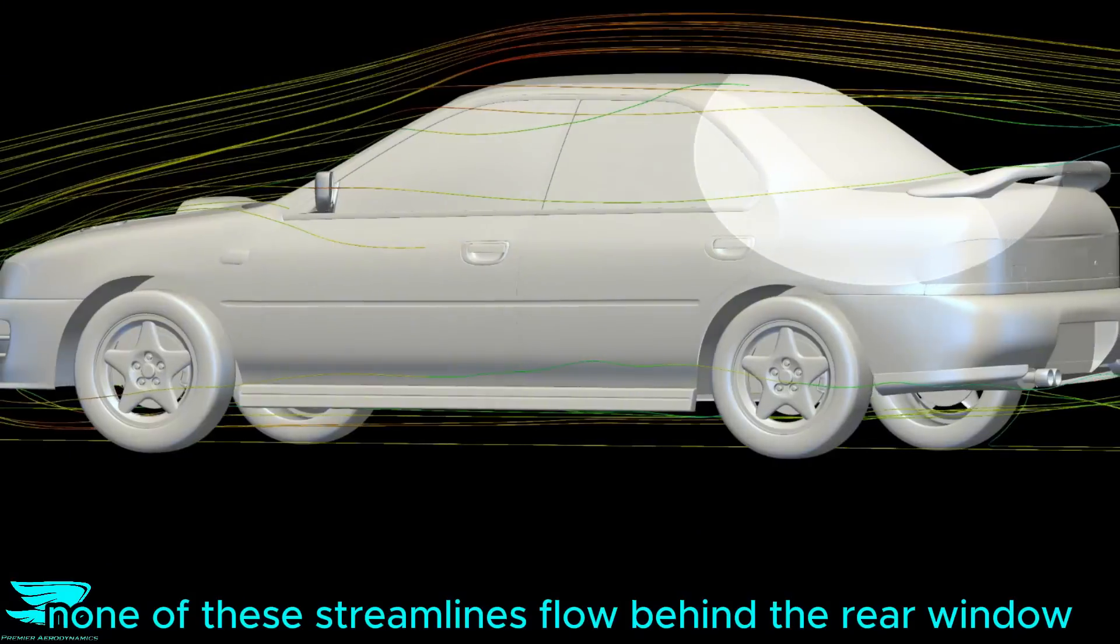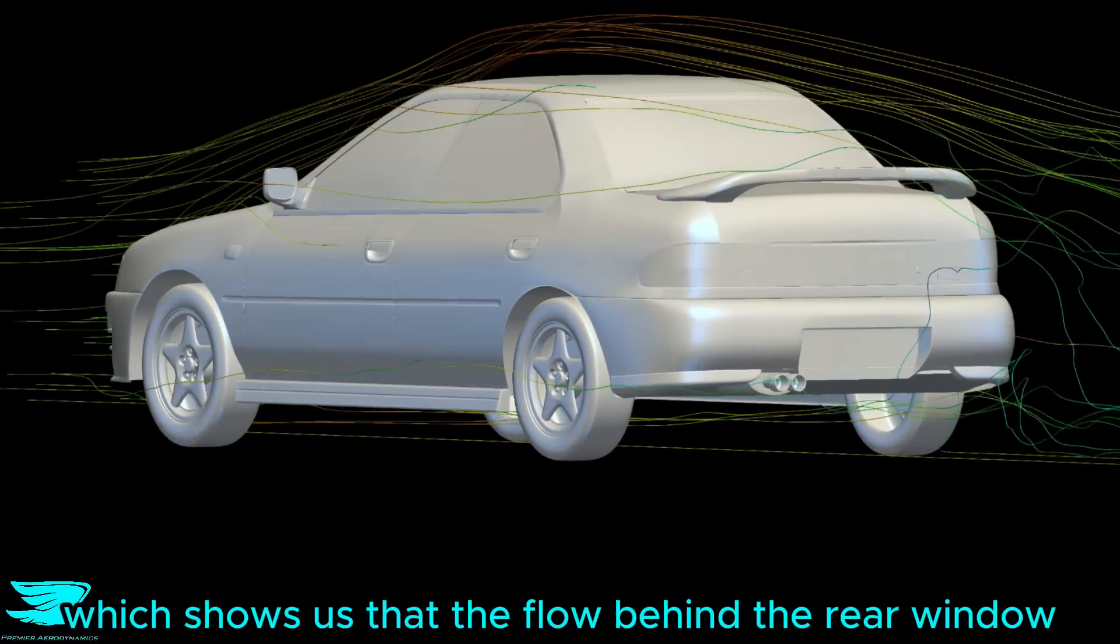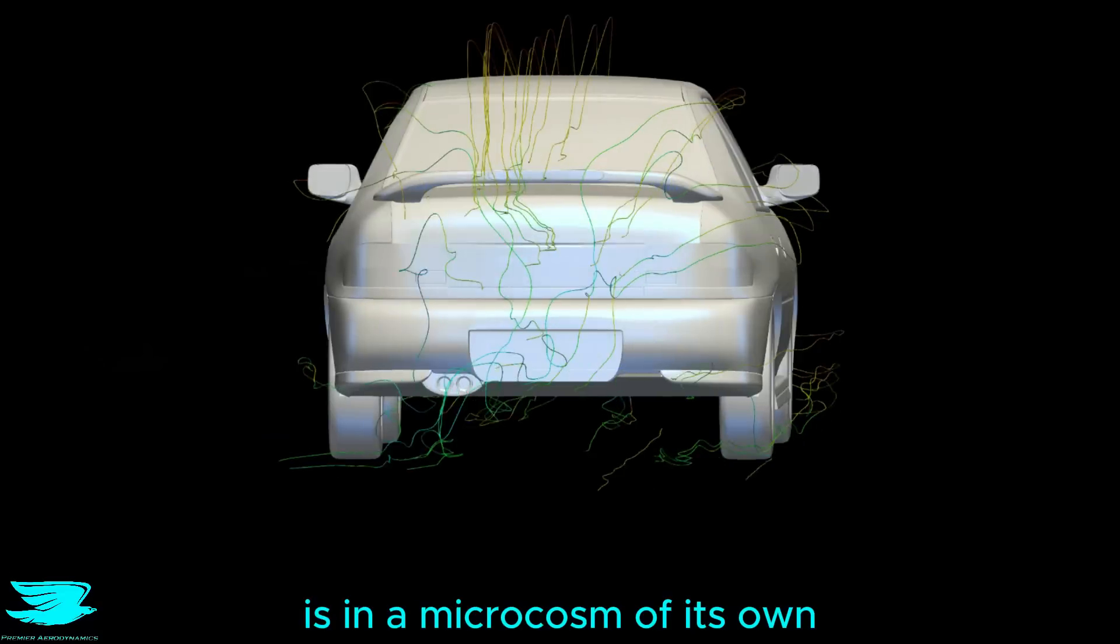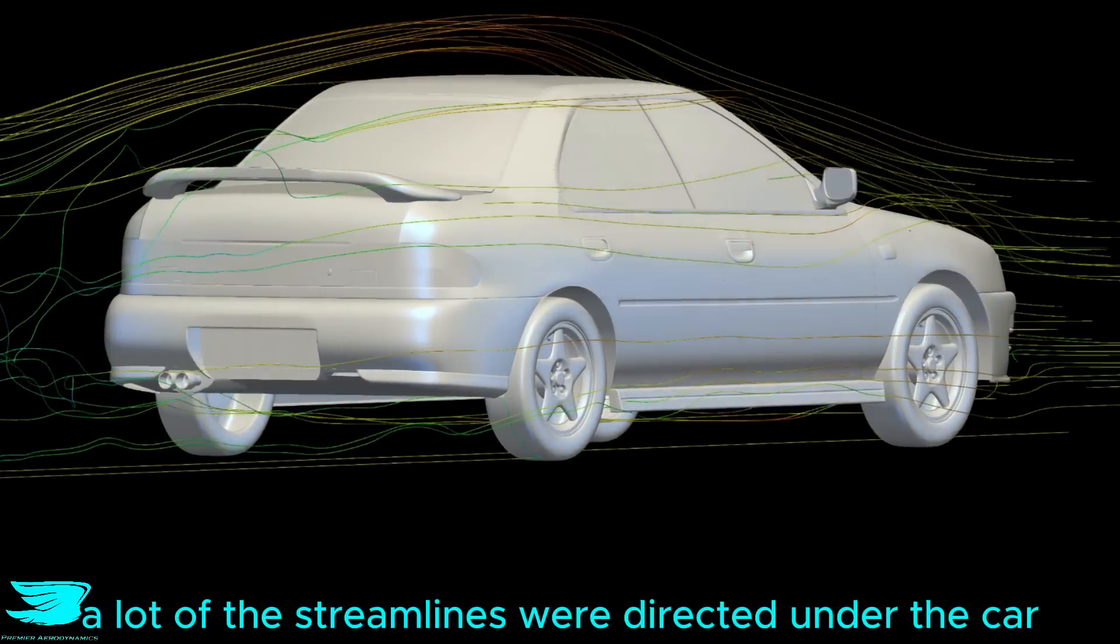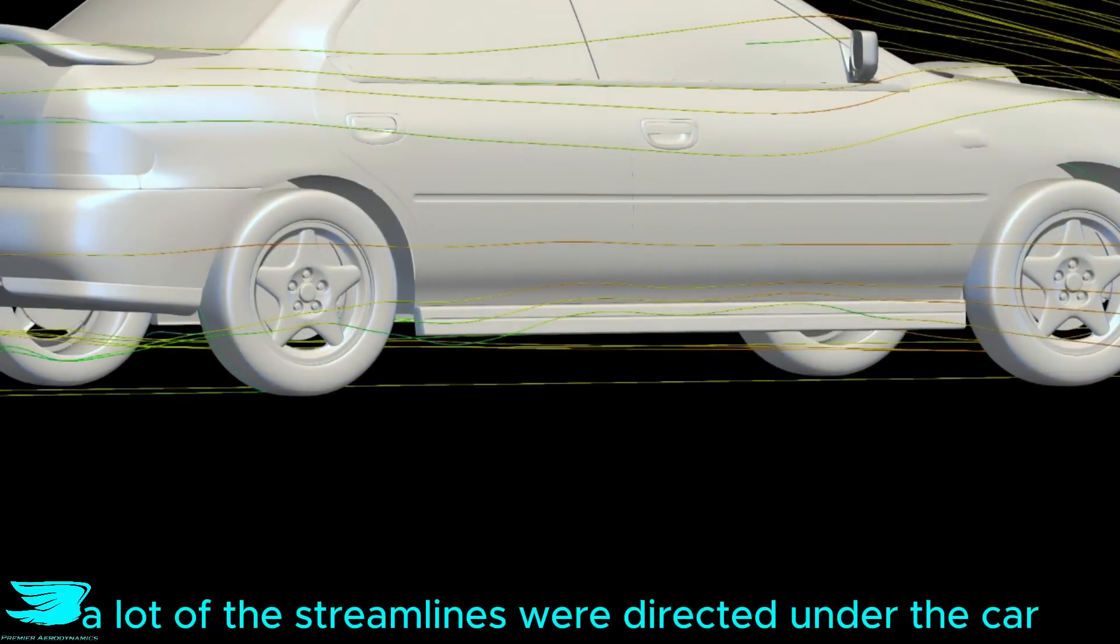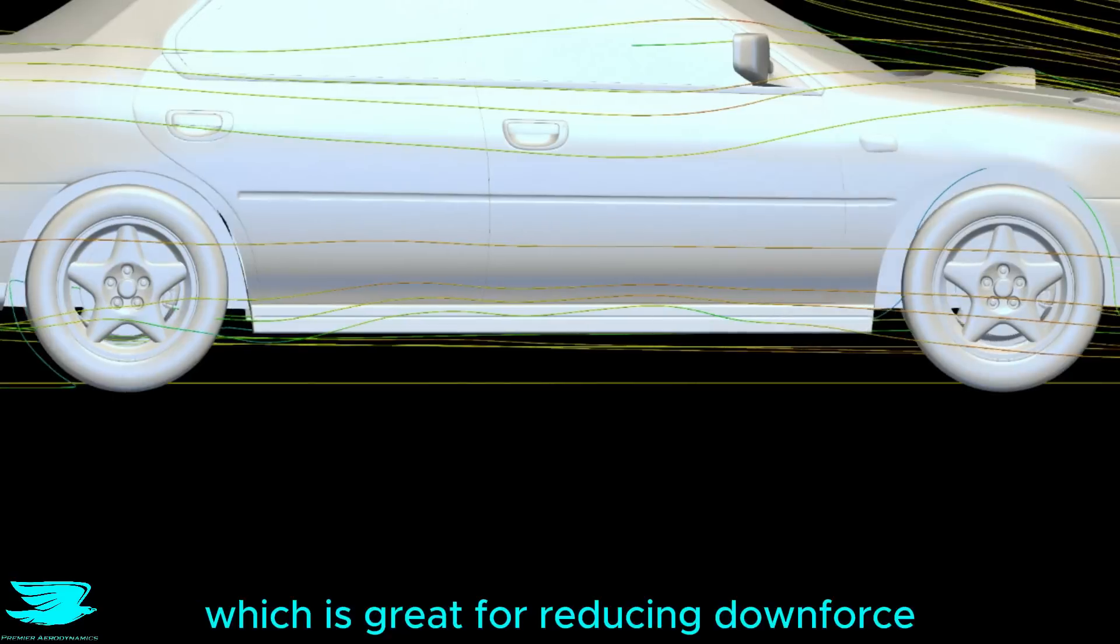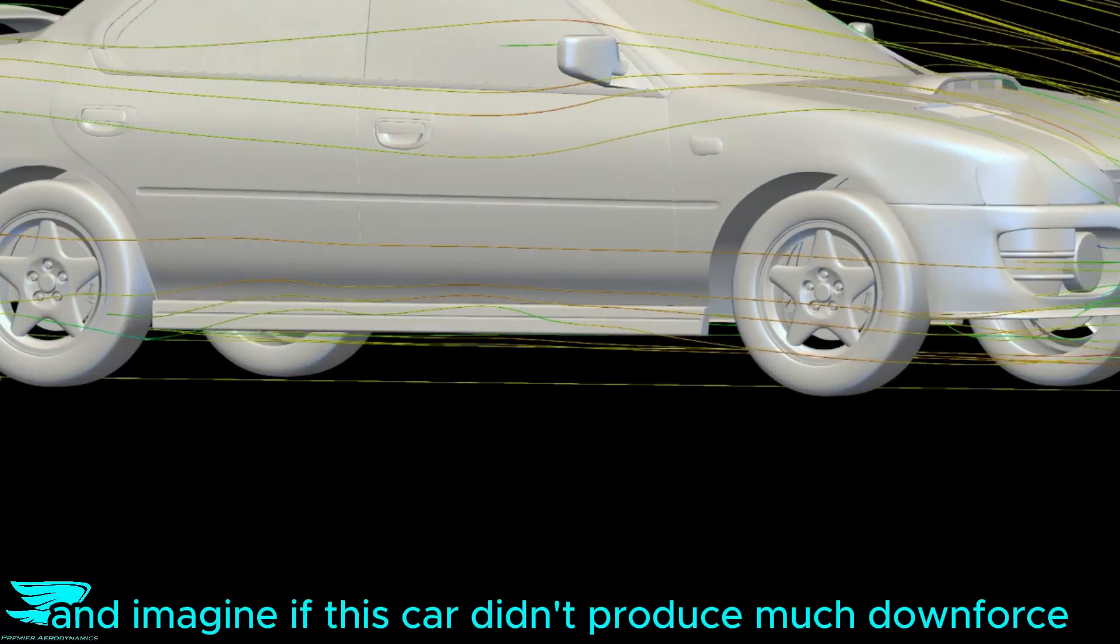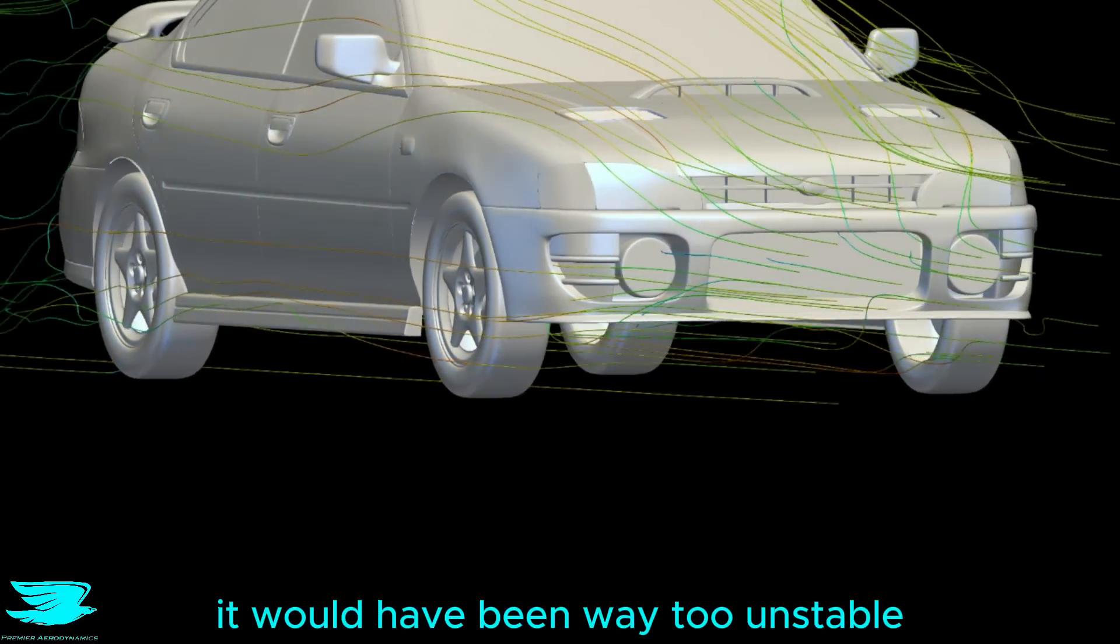None of these streamlines flow behind the rear window, which shows us that the flow behind the rear window is in a microcosm of its own. A lot of the streamlines were directed under the car, which is great for producing downforce. And imagine if this car didn't produce much downforce through the underbody. It would have been way too unstable.